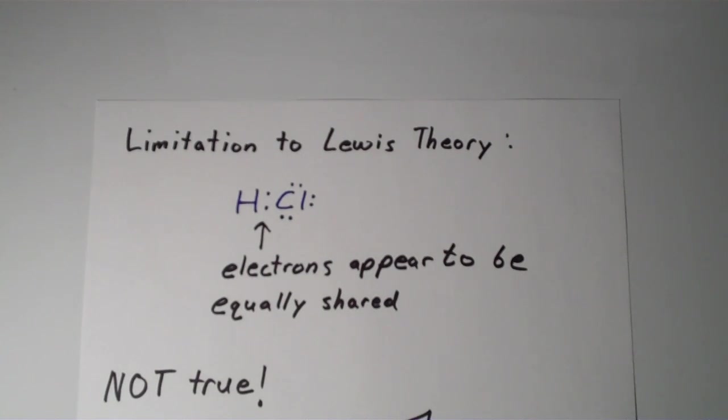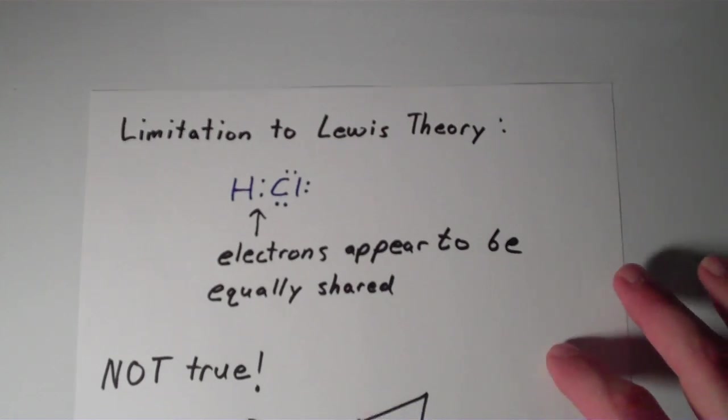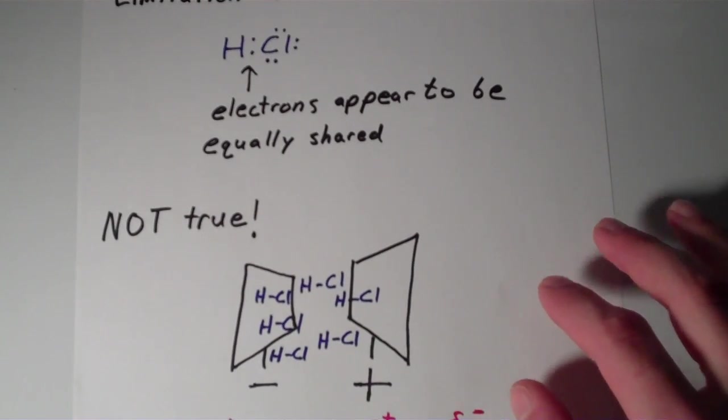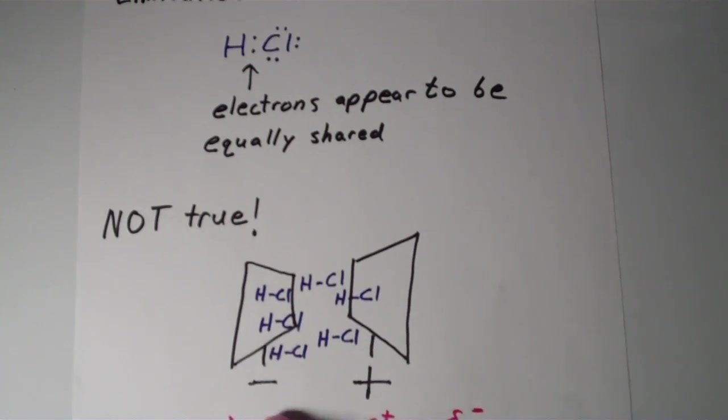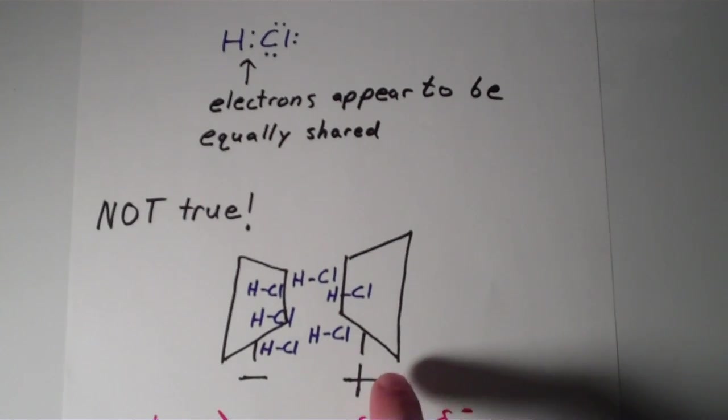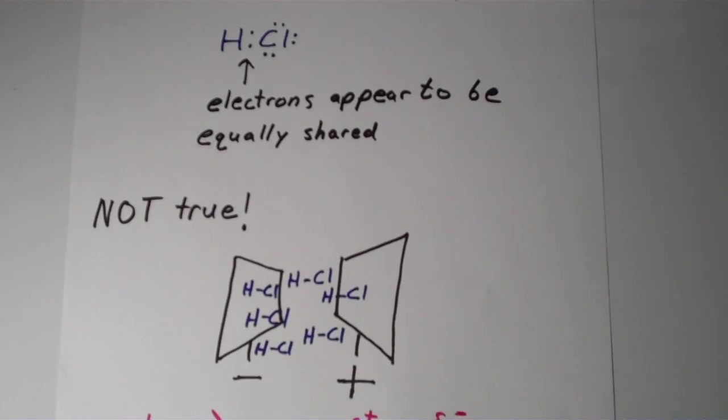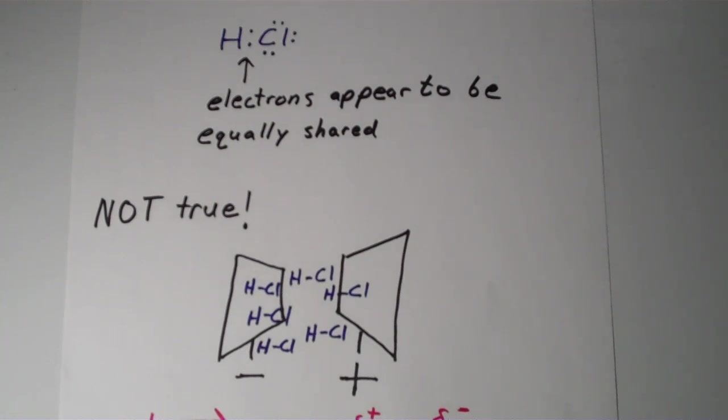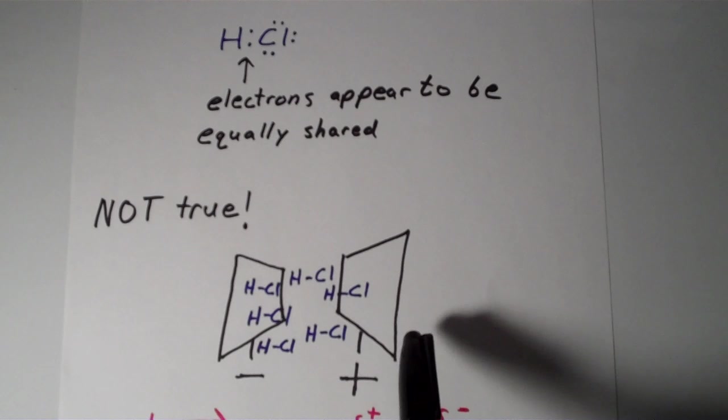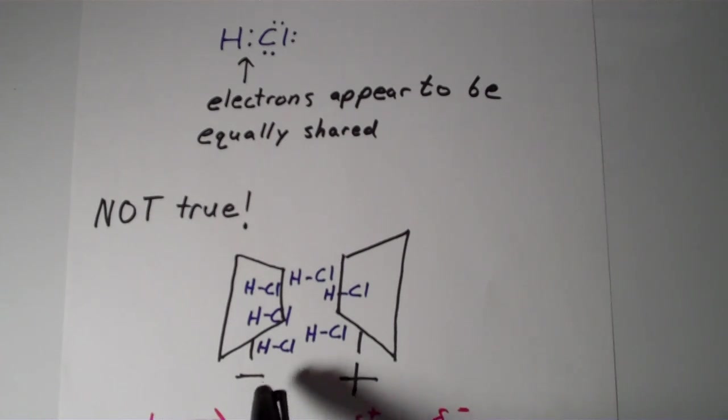This has been experimentally determined, it was determined long ago. If you expose hydrogen chloride to an electric field, so on the left there is the negatively charged plate, and on the right there's a positively charged plate. If you turn on these plates and create an electric field, and expose a sample of HCl to this electric field, you see that all of the molecules orient so that the chlorine atom is attracted to the positively charged plate, and the hydrogen atoms are all attracted to the negatively charged plate.